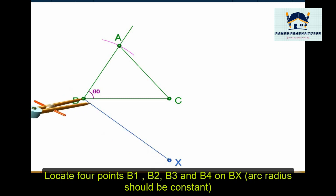Locate four points B1, B2, B3, and B4 on BX. Arcs of same radius. To mark these four points, you should take the same radius from the compass. Mark the four points.